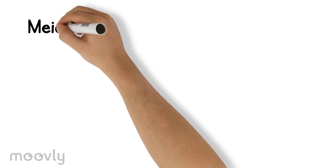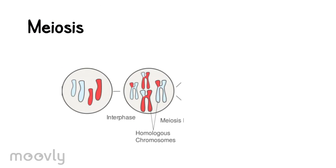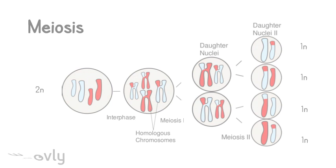There is another, more specialized form of cell division known as meiosis that occurs in sexually reproducing eukaryotes. Similar to mitosis, meiosis begins with chromosome duplication in the original parent cell. However, that parent cell then divides twice so that four granddaughter cells are produced with half the number of chromosomes.